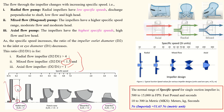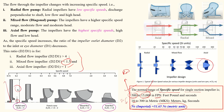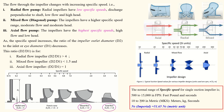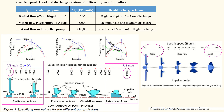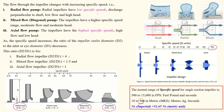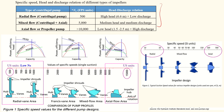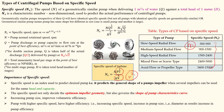The specific speed range for a single suction impeller is 500 to 15,000 in FPS units — 500 for radial and 15,000 for axial. To convert from imperial (FPS) to metric units, multiply by 50. This is the same as the values shown in the diagram. A summary table is provided with all values organized by pump type — please review it carefully.